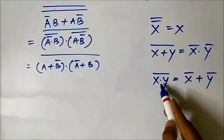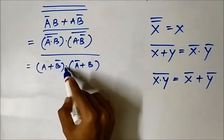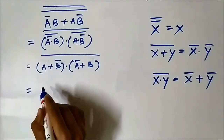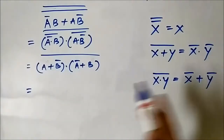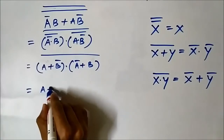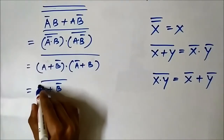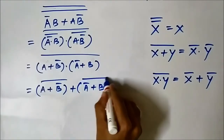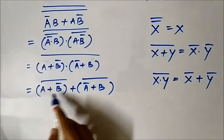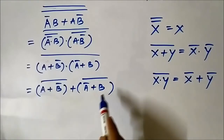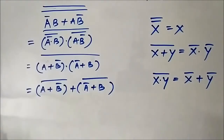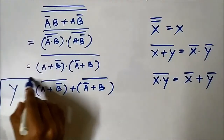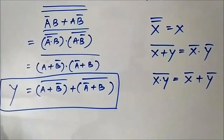We will use De Morgan's theorem again to convert the AND into OR by breaking the complement sign. It will be A OR B complement, whole complement, OR A complement OR B, whole complement. Now you can see that in this expression all the terms are in OR form — there is no AND symbol. So now we can easily implement this expression using a NOR gate to give us the desired XOR gate output.